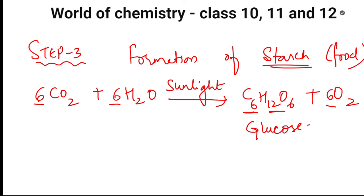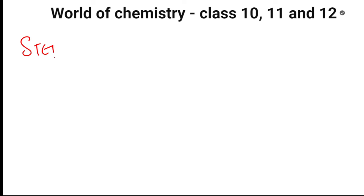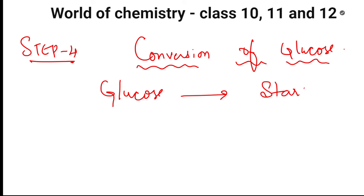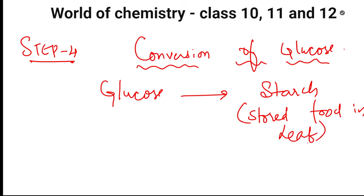Now what will happen in step 4? In step 4, the glucose gets converted into starch. This is the most important step. The glucose whatever is there gets converted to starch. Starch is a stored food — this is the stored food which is there in the leaf and other parts also. The food is stored as a reserve. That is how the complete reaction in the presence of sunlight — that is photosynthesis.